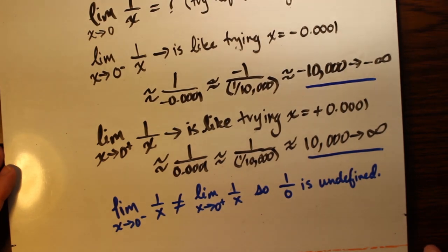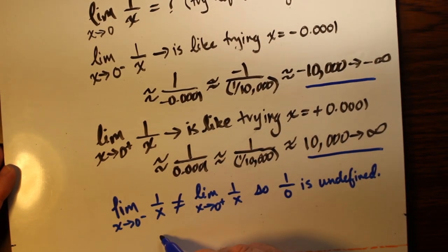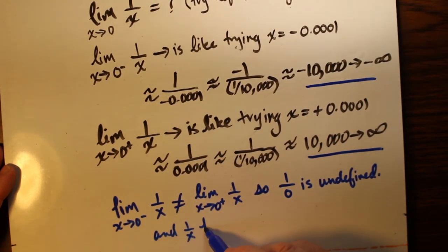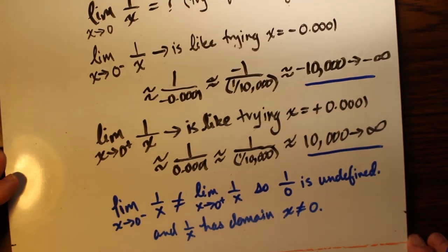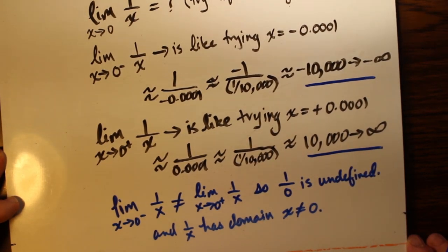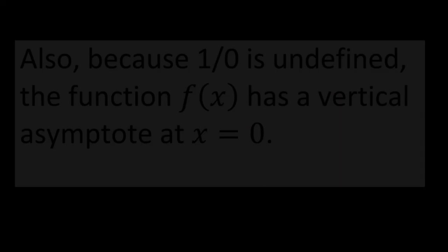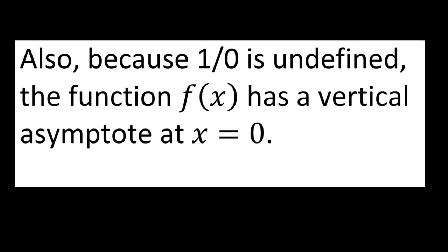So we say that 1 over 0 is undefined at zero. For one thing, the domain of 1 over x is any number except zero, and that also indicates that x equals 0 is a vertical asymptote for the function 1 over x, which means the y-axis is a vertical asymptote.